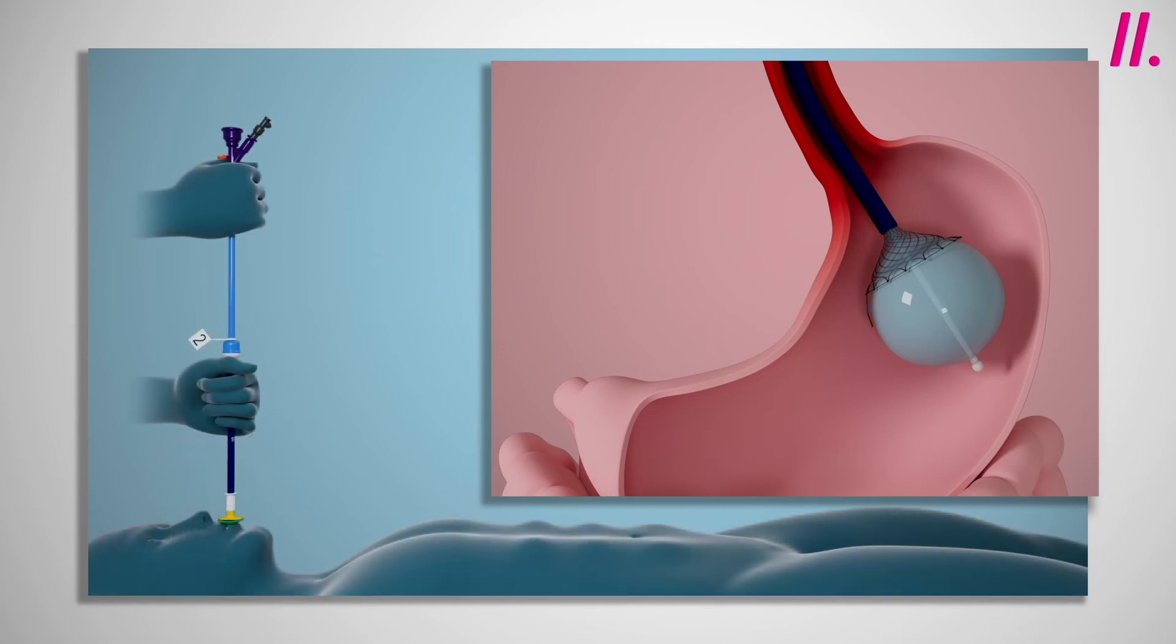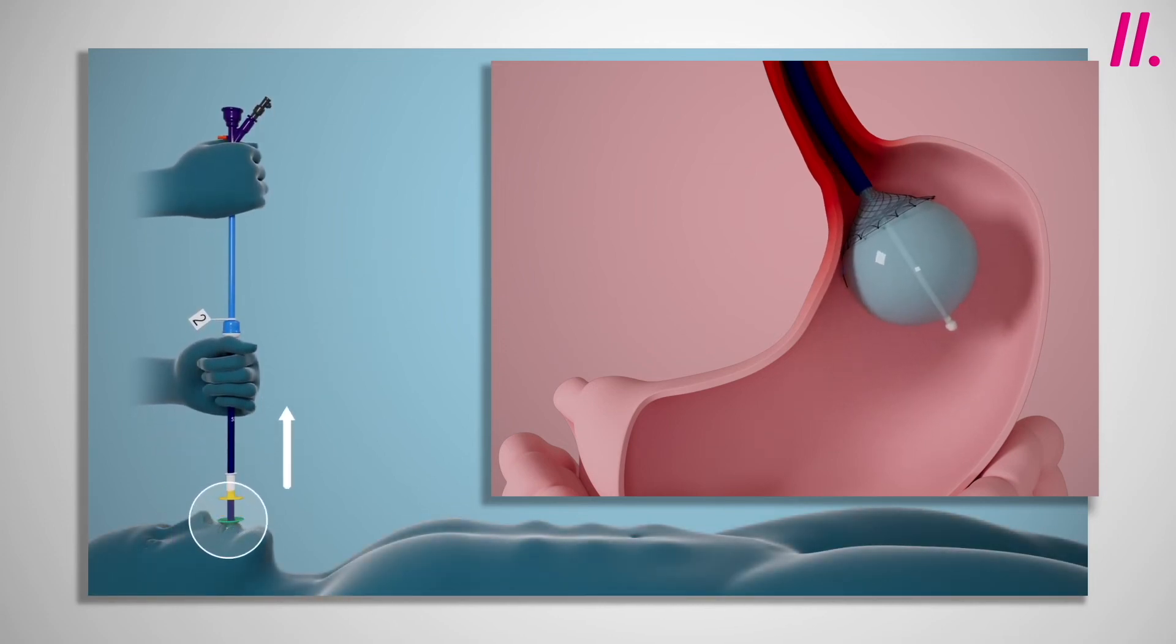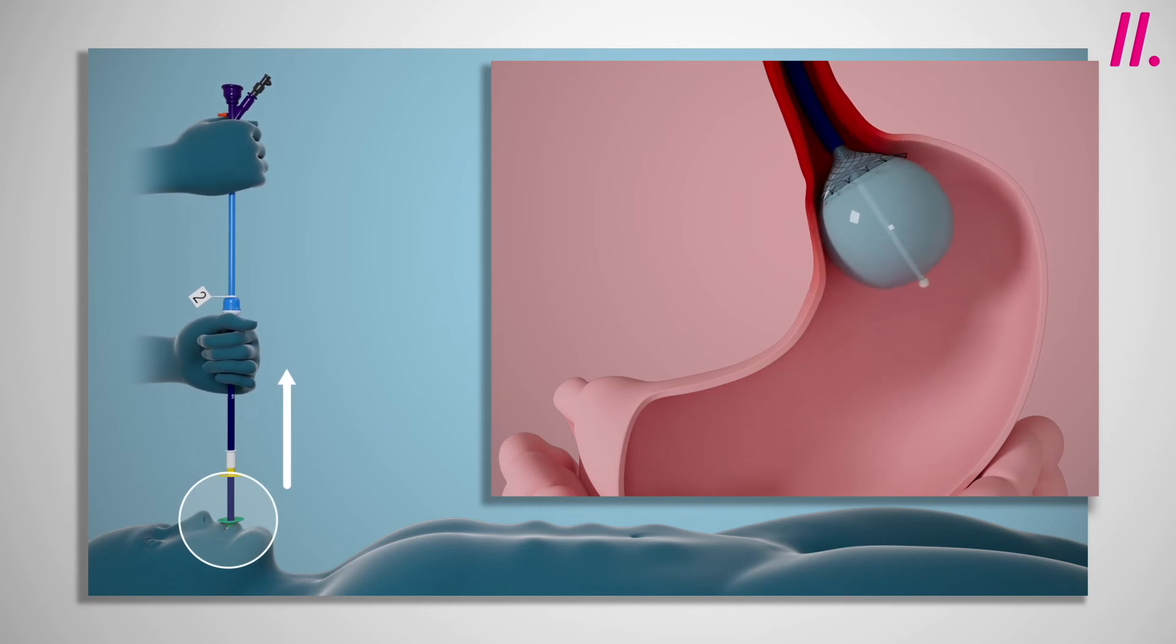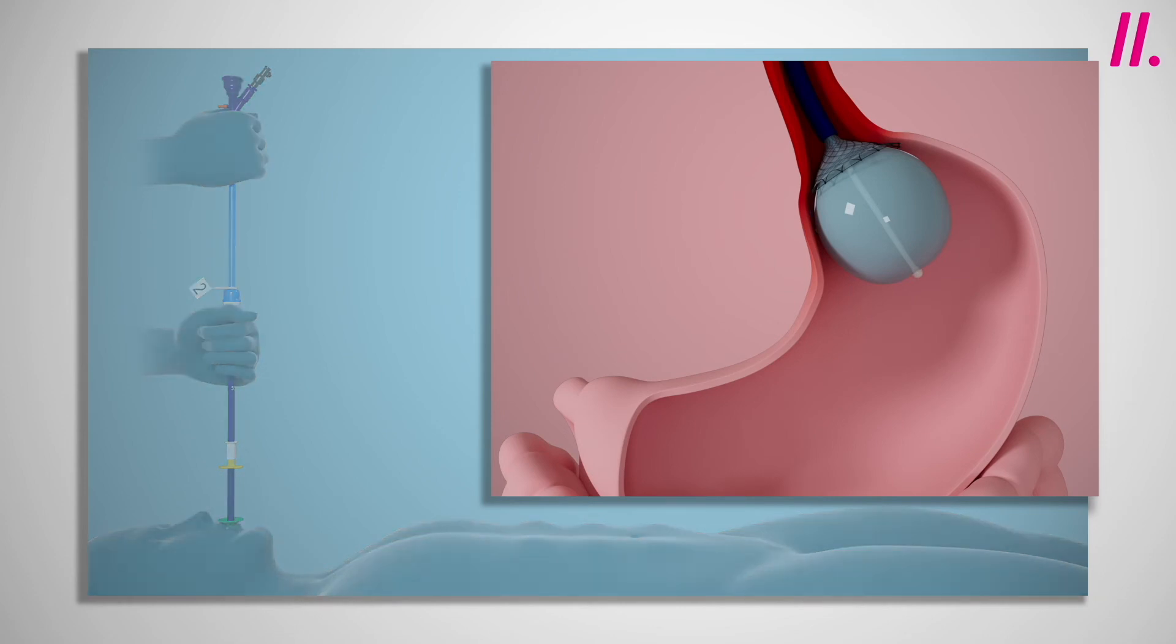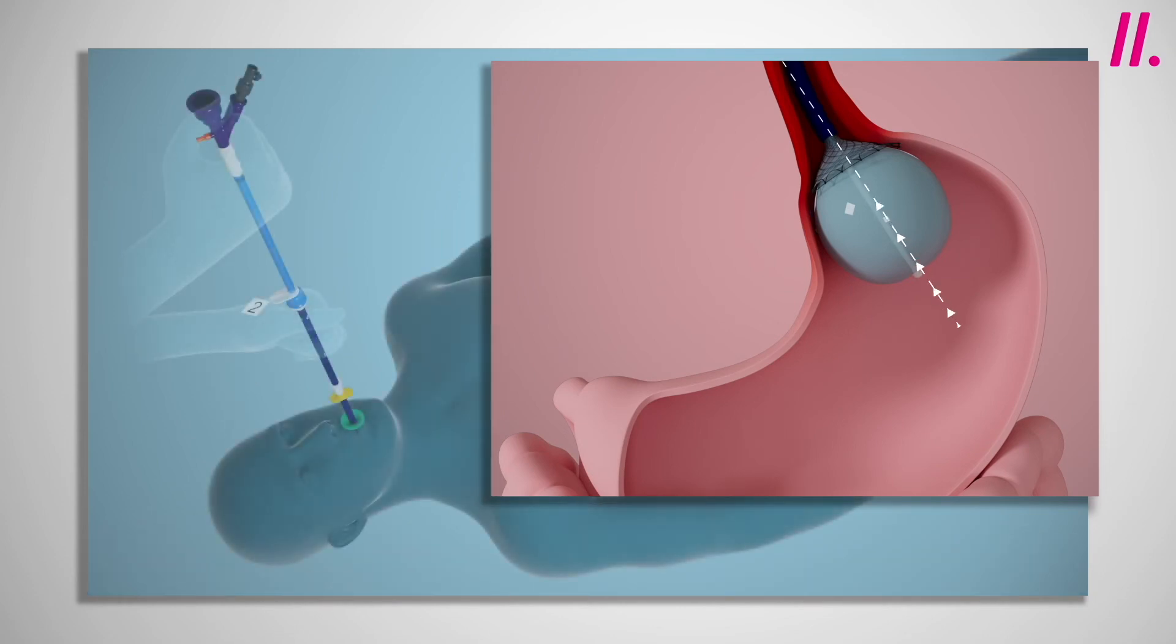The entire system should then be withdrawn until resistance is felt, indicating that the balloon has engaged and has fixed the distal end of the stent at the gastroesophageal junction. It is imperative that moderate traction is maintained on the system to prevent the balloon from disengaging and causing the stent to migrate forward prior to deployment.